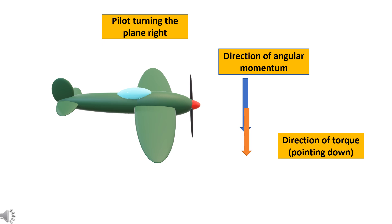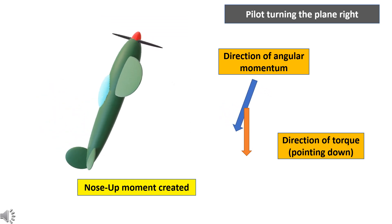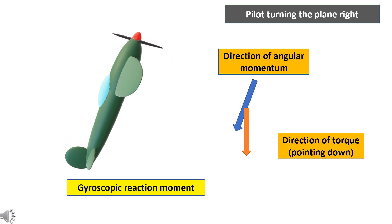So, what will happen because of this? This moment generated will move the aircraft nose up and the tail down. This anticlockwise moment generated during the turning of the aircraft is the gyroscopic reaction moment or reaction torque. This effect is called the gyroscopic effect.